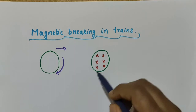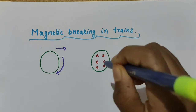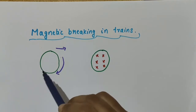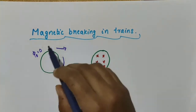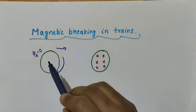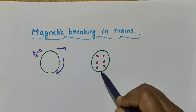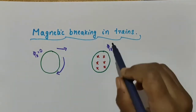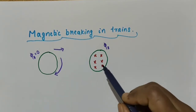So this is the wheel of the train before activating the electromagnet, and this is after activating the electromagnet. The wheel got exposed to the magnetic field lines directed into the plane of the board. Initially, the flux associated with the wheel was zero because there were no magnetic field lines. But after activating the electromagnet, the wheel is exposed to the magnetic field, so the magnetic flux has increased from zero to some other value. There is now a change in magnetic flux.